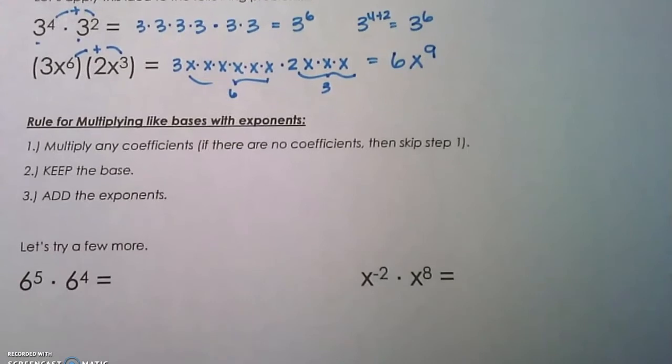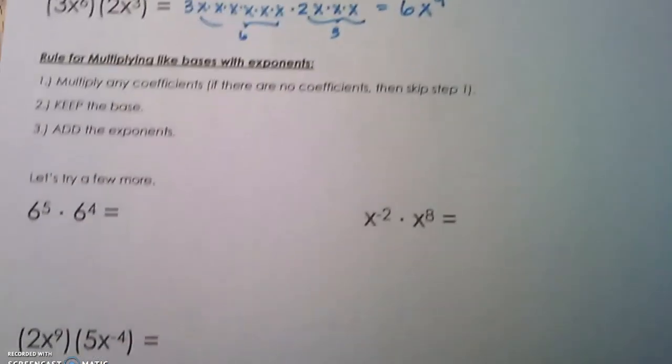if we have any coefficients, multiply those. Keep the base, add the exponents. Let's apply that to these last examples.